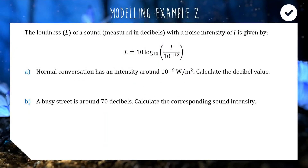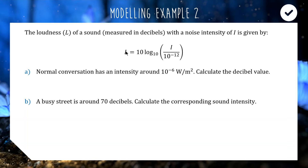For the next problem, the loudness of a sound measured in decibels with noise intensity i is given by: loudness in decibels equals 10 times log base 10 of intensity divided by 10 to the power of negative 12. Interestingly, loudness is a logarithmic scale — if you had two speakers playing the same music at the same volume, it wouldn't sound twice as loud. To double the decibels you would need 10 speakers.